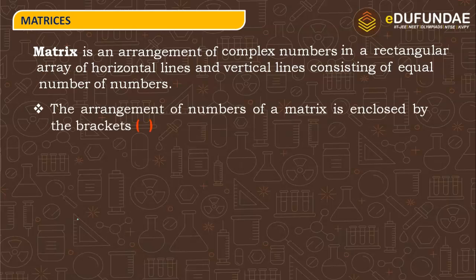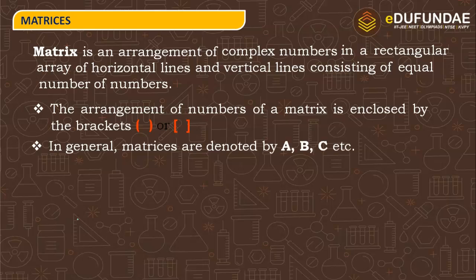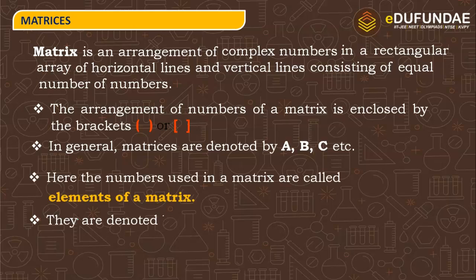A matrix has elements arranged within brackets — you use brackets to represent a matrix. In general, matrices are denoted by A, B, C, etc. The numbers used in a matrix are called elements of the matrix.